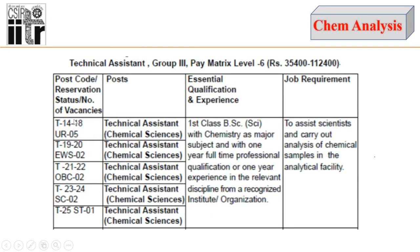For the Technical Assistant post for chemistry background students, there are a total of 12 seats: 5 unreserved, 2 for EWS, 2 for OBC, 2 for SC, and 1 reserved for PH candidates. The essential qualification is first-class BSc with Chemistry as a major subject, plus one year full-time professional qualification or one year experience in the relevant discipline from a recognized institute or organization. The duty will be to assist scientists and carry out analysis of chemical samples in the analytical facility.